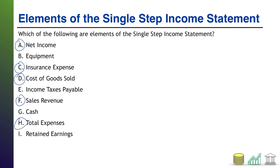And finally, I — retained earnings. Net income, which is on the income statement, does impact retained earnings, but retained earnings itself is not an income statement item. Retained earnings goes in the shareholder's equity section of the balance sheet. So we had five of these items that belong on the single step income statement.